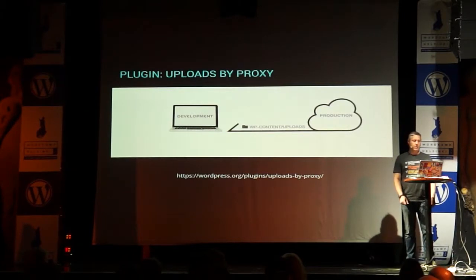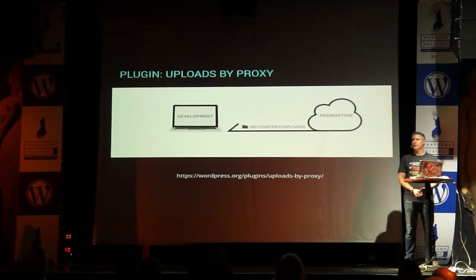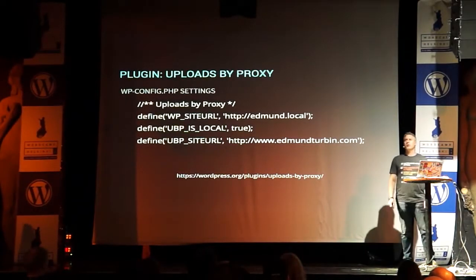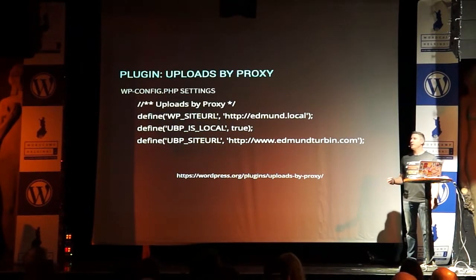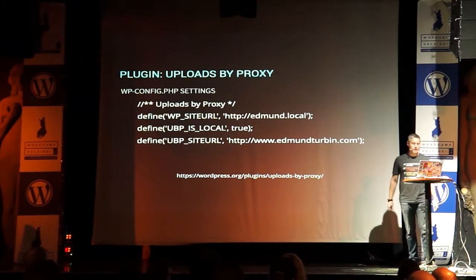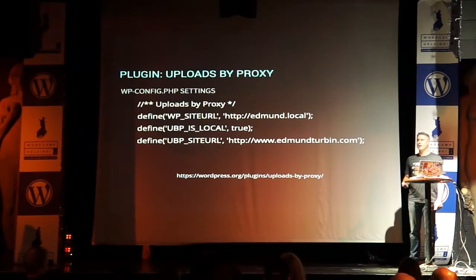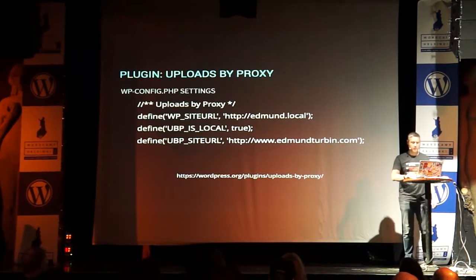For the case where you don't want to download all the files, there's a plugin called Uploads by Proxy that's fantastic. It looks locally for a file, and if it's not there, it uses your production server. So you don't have to copy any files down to local dev — you just use this plugin to automate that. The configuration requires you to define your site URL, set uploads by proxy to local, and provide the production URL where images will be pulled from. This configuration is something you'd want on your dev environment but not production.